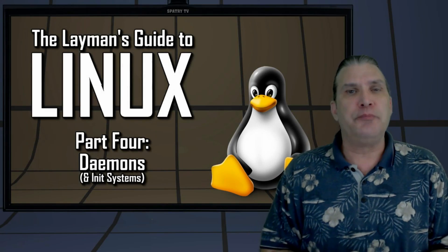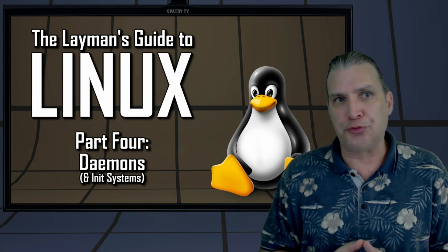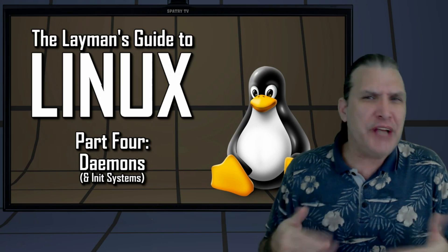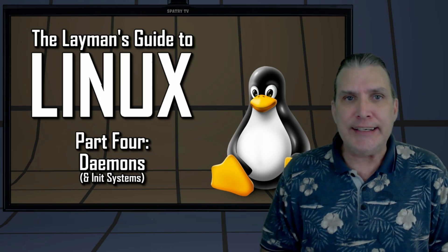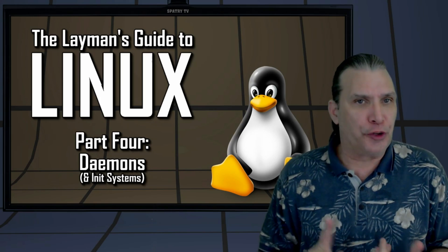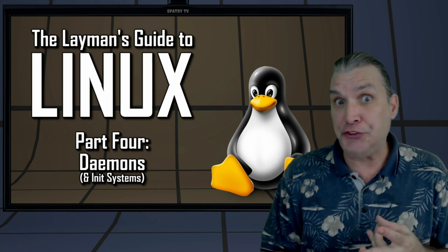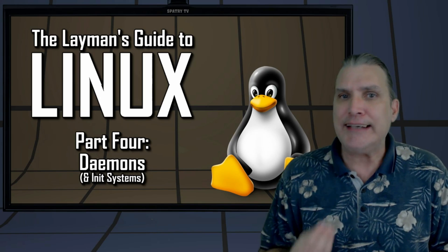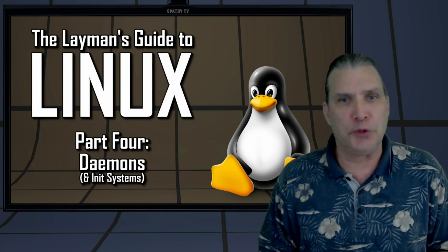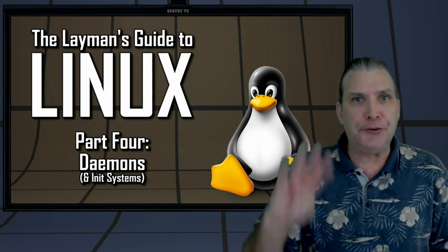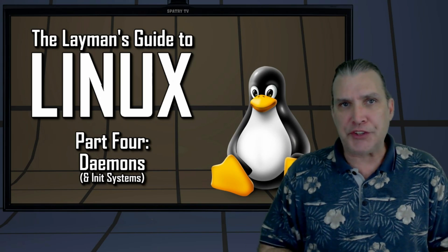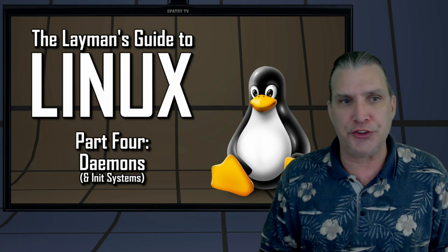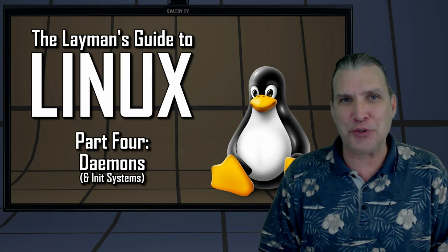In a typical Linux system, there are various services running as processes in the background, taking care of things like configuring your network connection, responding to connected USB devices, managing your logins, managing file systems, and more. They are often called daemons because they are running silently and are mostly invisible to the user. You are watching Episode 4 of the Layman's Guide to Linux, and today I am going to be discussing daemons and initialization systems on Spattery's Cup of Linux.